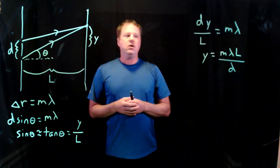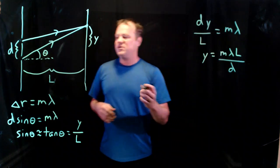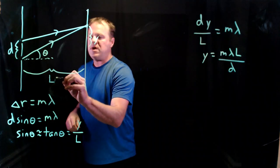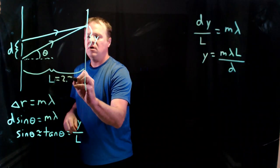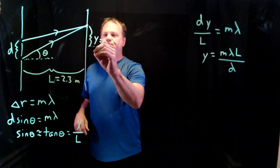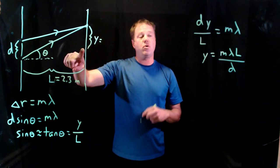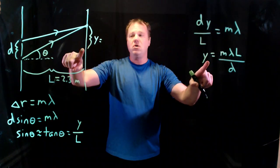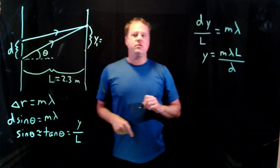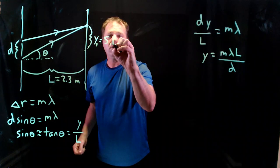And let's go ahead and make up some numbers and see if we can solve a physics problem. So let's say that we have our double slit 2.3 meters away from a distant screen, and let's say that we find the distance between the central bright spot, which would correspond to m equals 0, y equals 0, and the first bright spot above or below it is 5.1 millimeters.